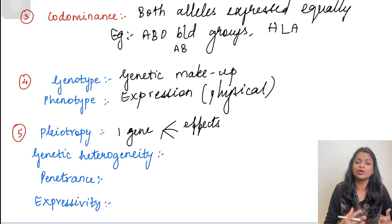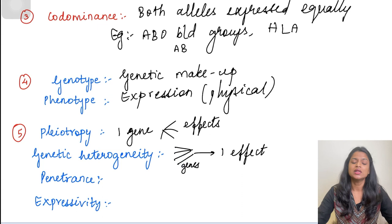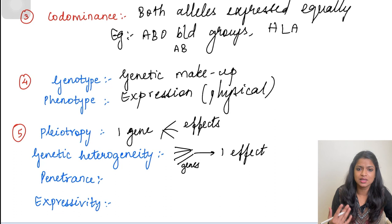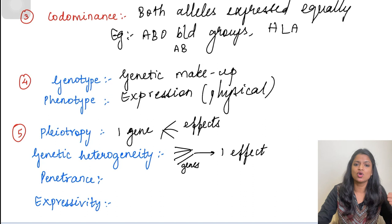Next is genetic heterogeneity — the exact opposite of pleiotropy. Here, various genes contribute to a single effect. The example is congenital deafness, where various causes and various genes contribute to this single condition. Various genes contributing to a single effect is called genetic heterogeneity.